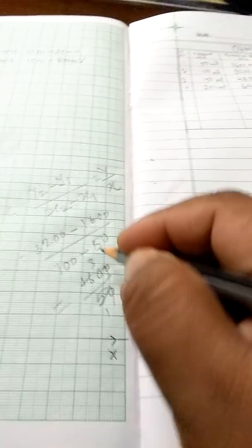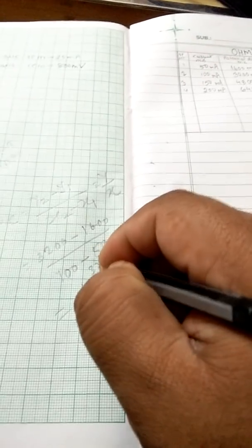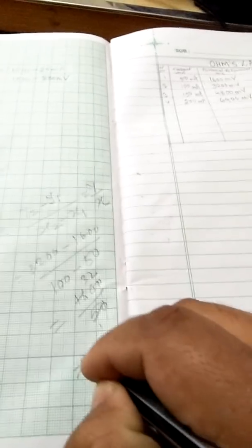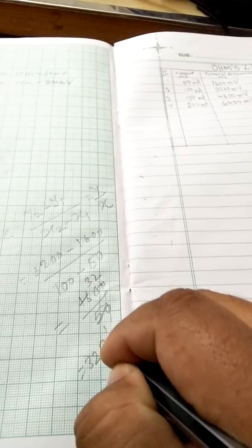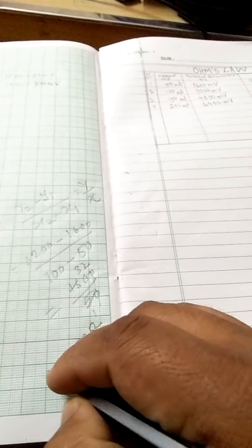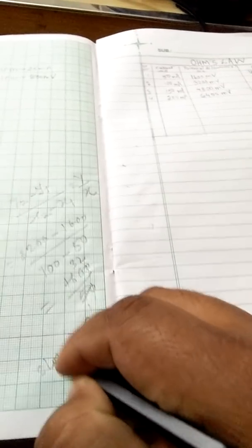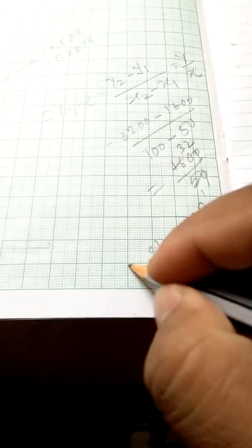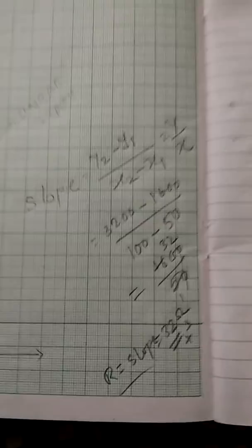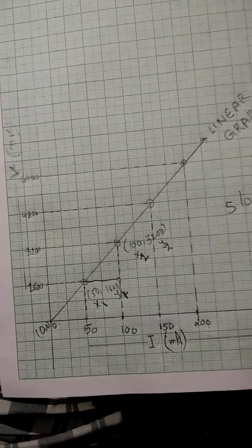The answer comes out as 32 ohms. So your slope is 32 ohms, which is nothing but your resistance. This is all about your Ohm's law graph. Thank you very much.